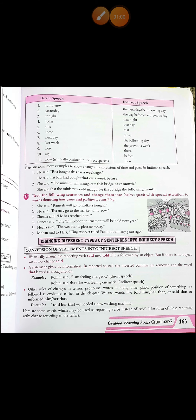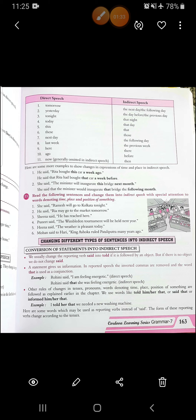A statement gives us information. In reported speech, the inverted commas are removed and the word 'that' is used as a conjunction. See the example: Rohini said, 'I am feeling energetic.' The answer is: Rohini said that she was feeling energetic. There was no object, so we have not changed 'said' into 'told', and we directly changed it by using the conjunction 'that'.